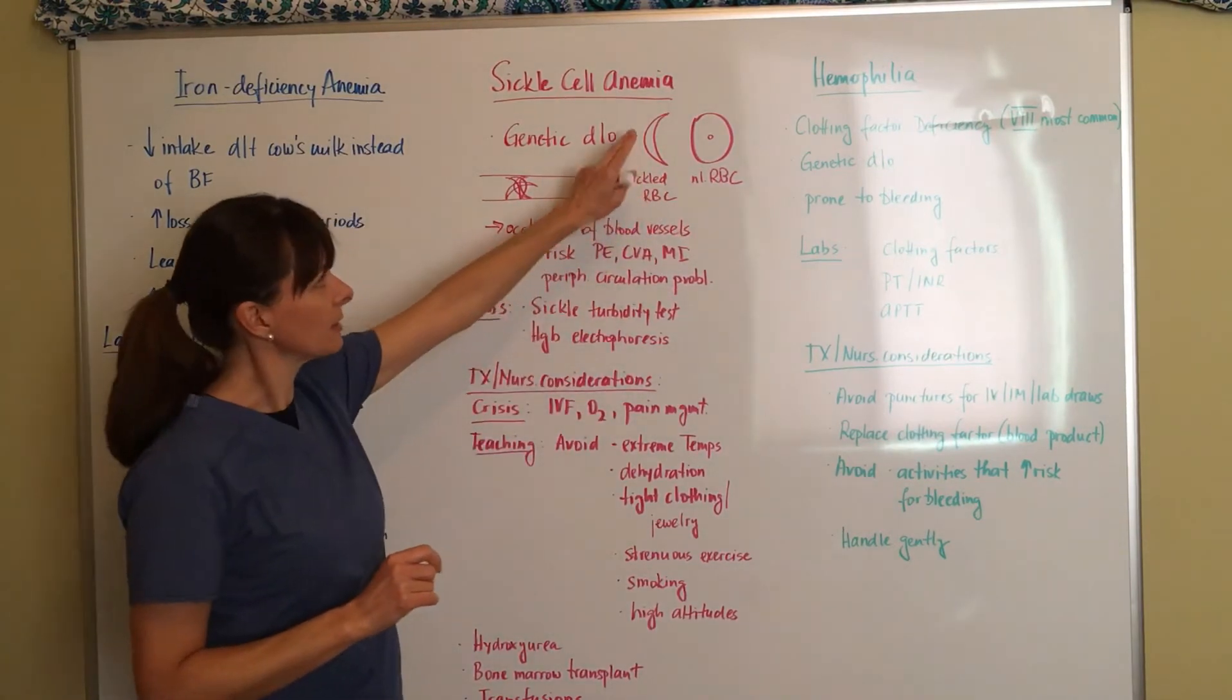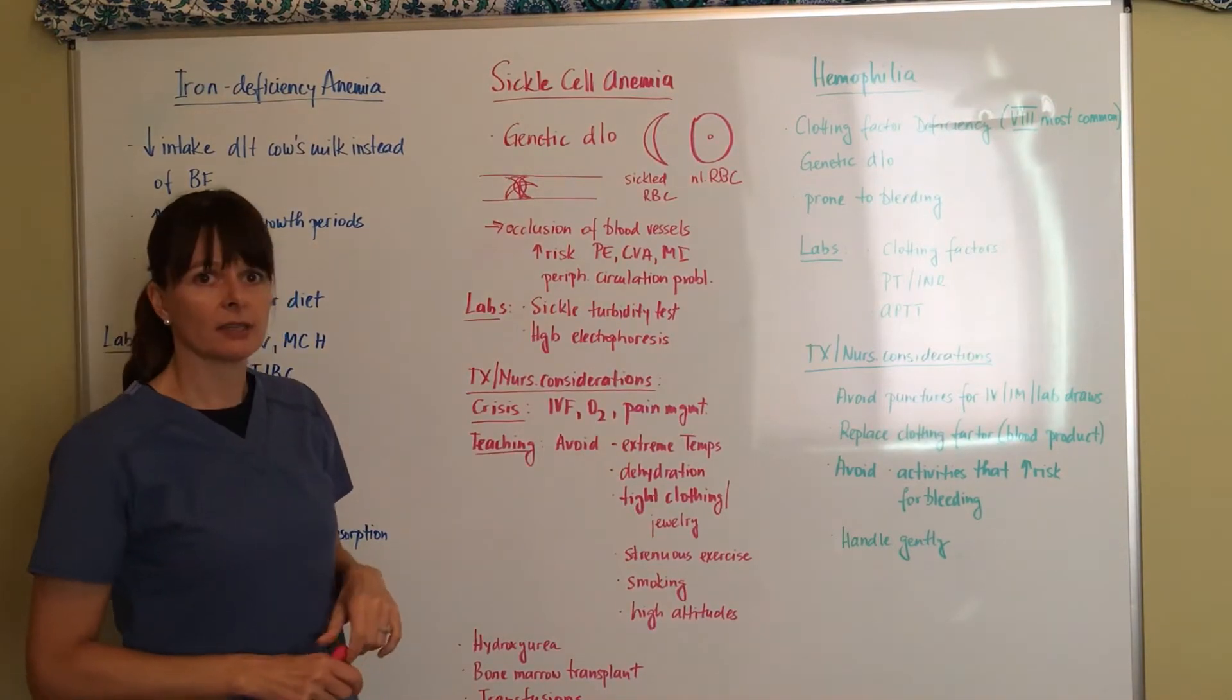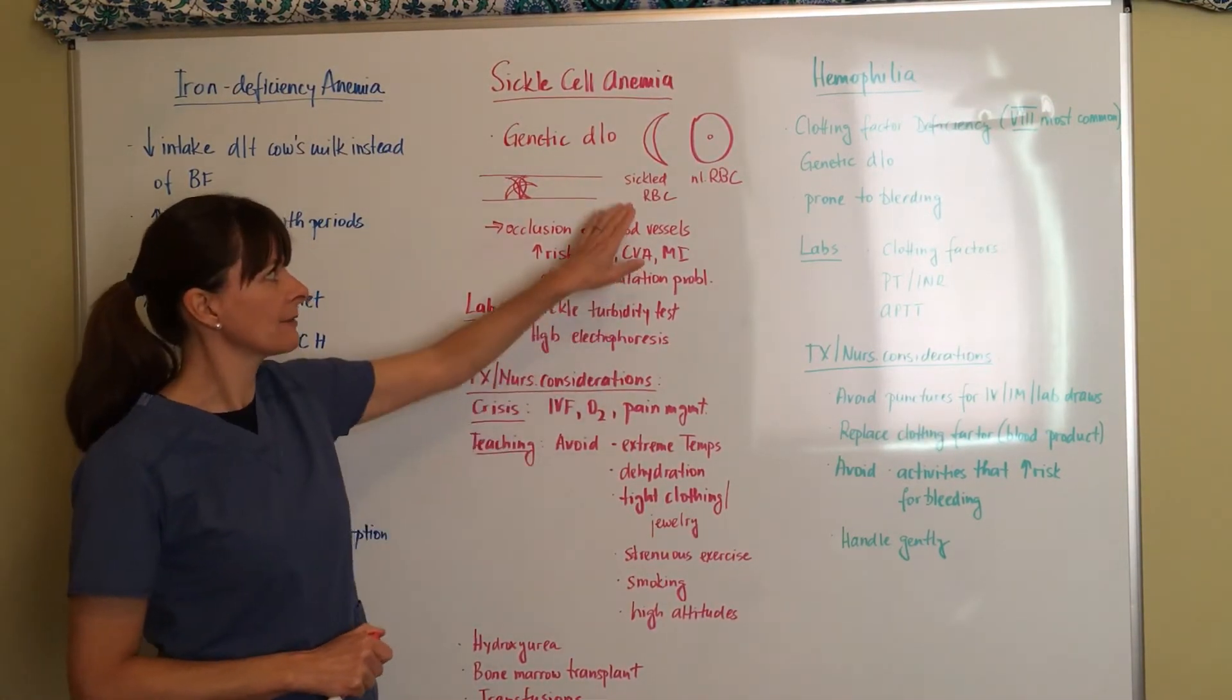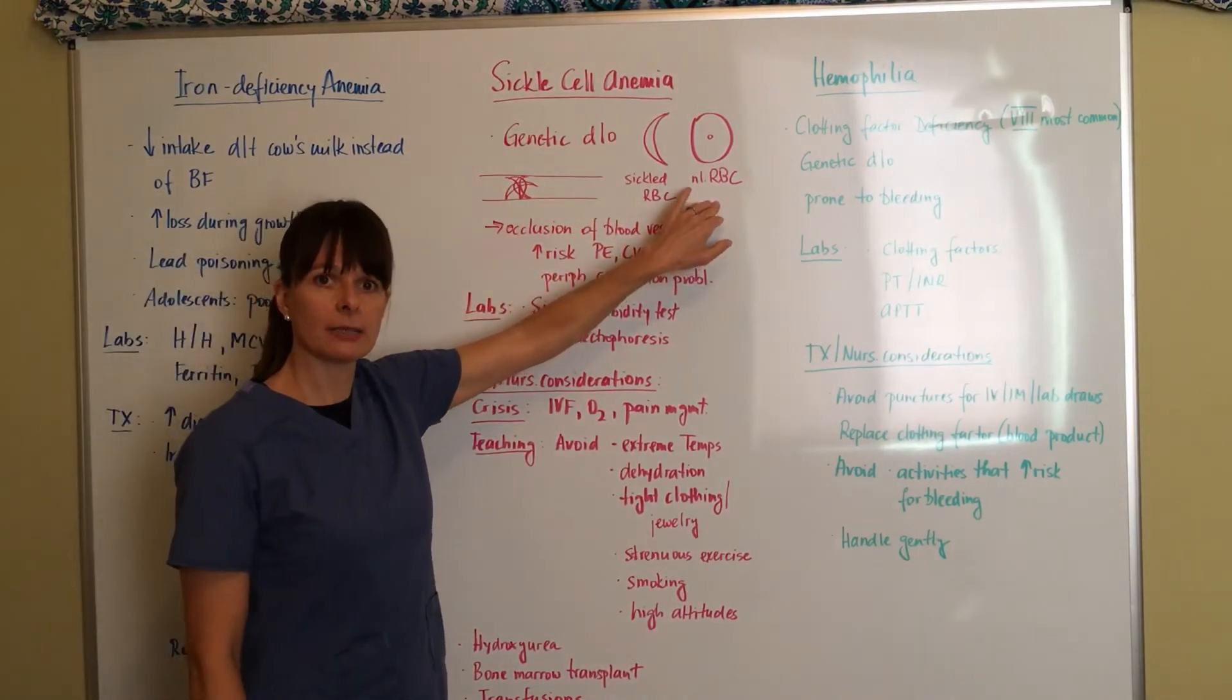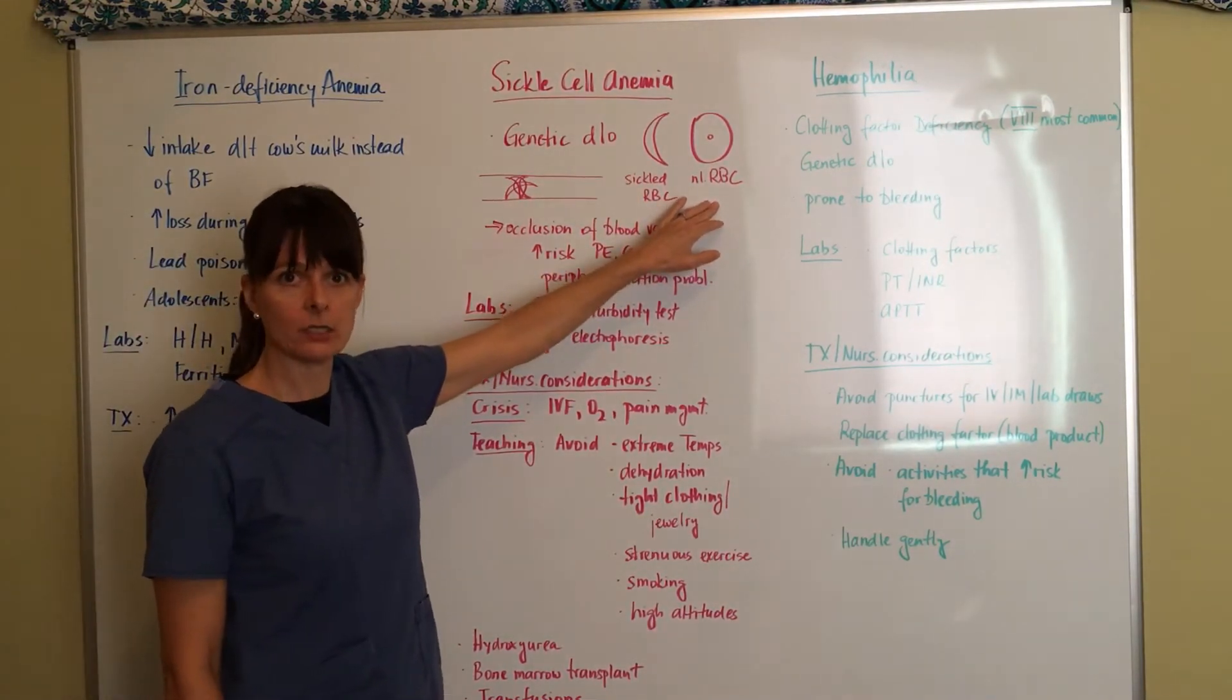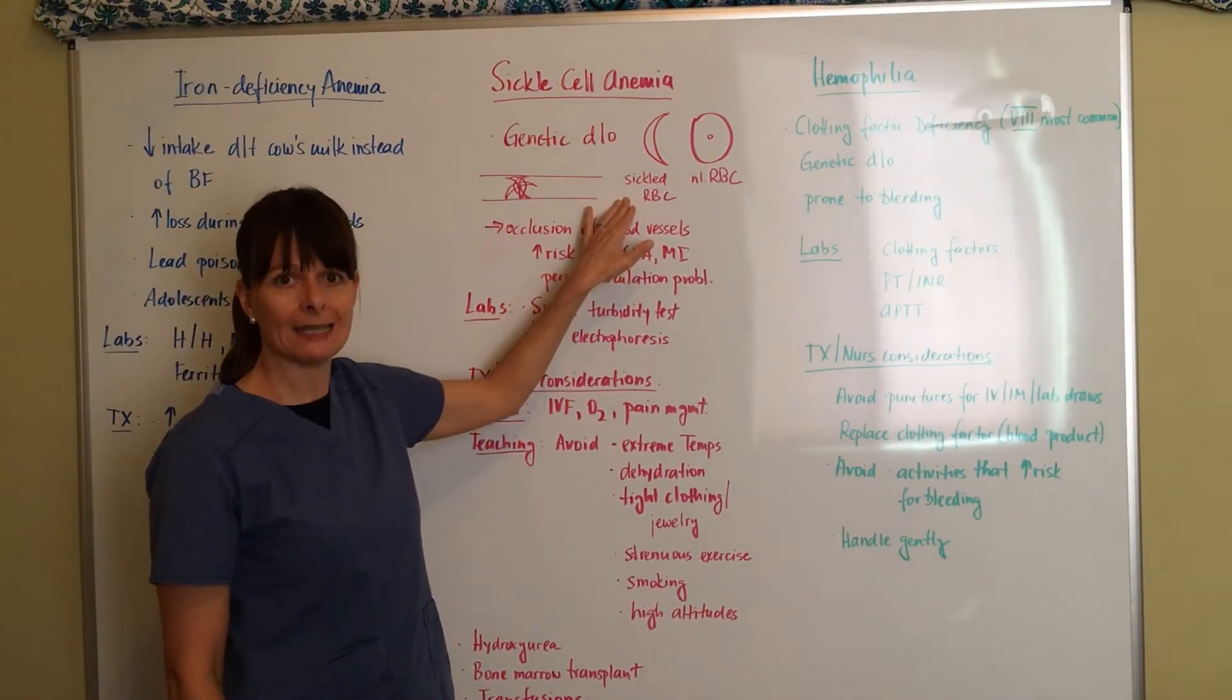The sickled cell is kind of a half moon shape, as you can see here. The other interesting thing about sickle cells is their lifespan is much shorter. A typical red blood cell's lifespan is about 120 days, three months, whereas some sickled cells might only have a lifespan of about 10 days.